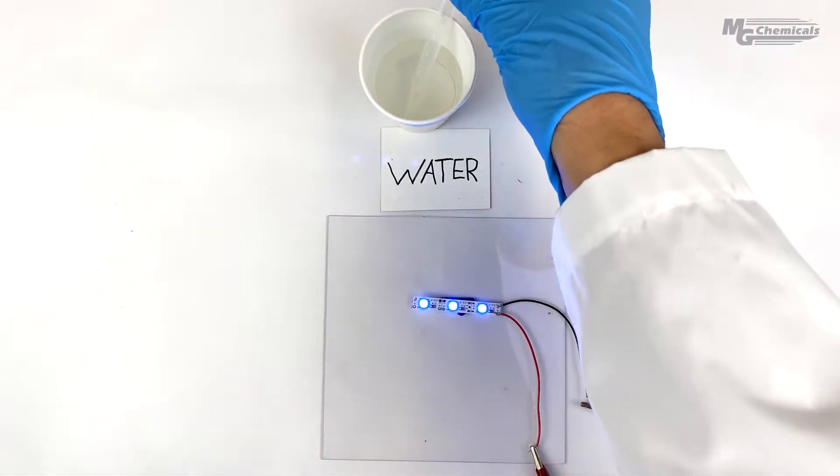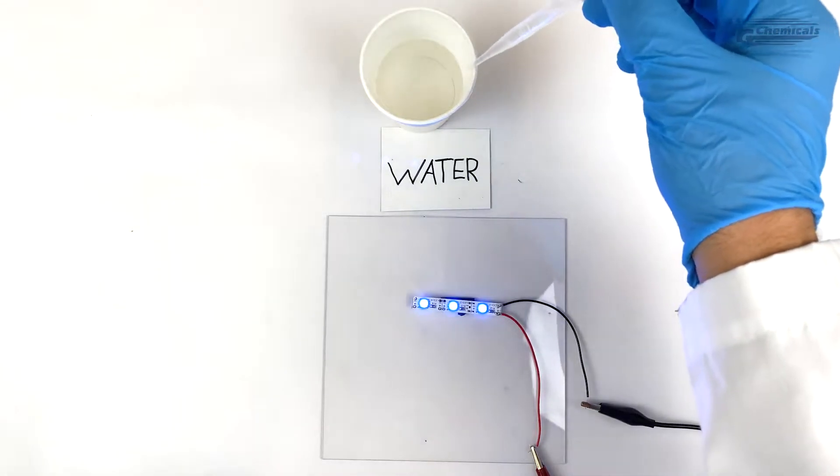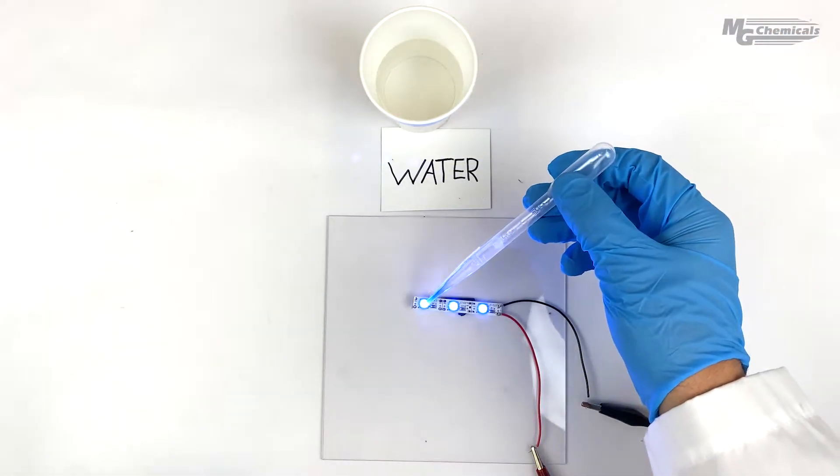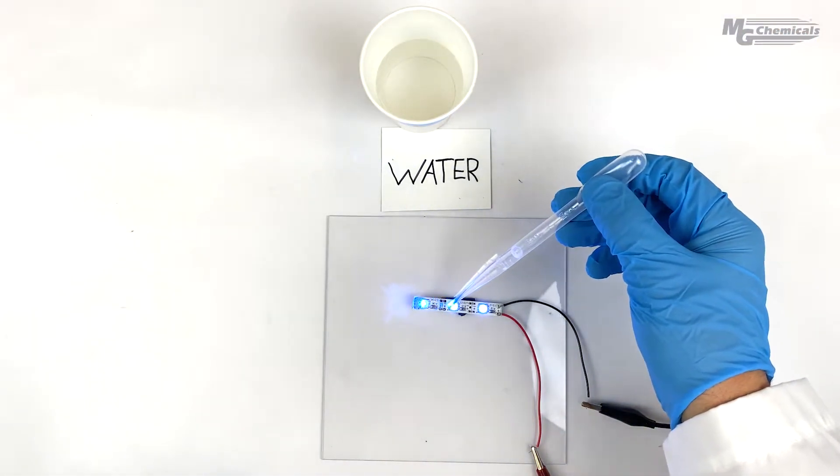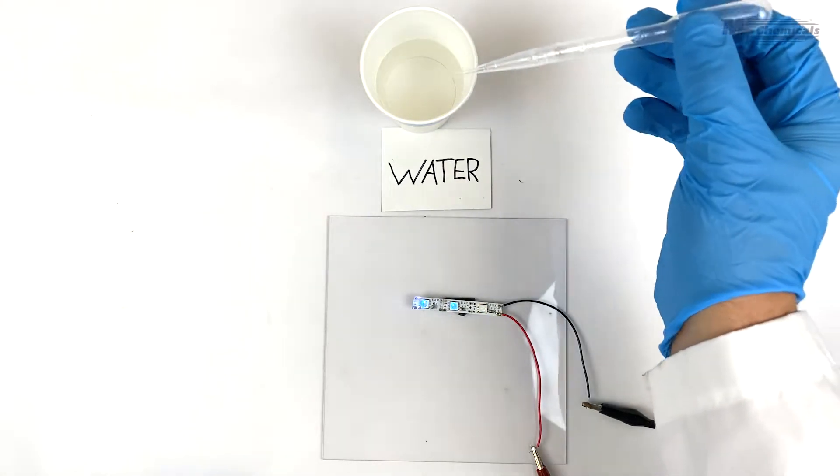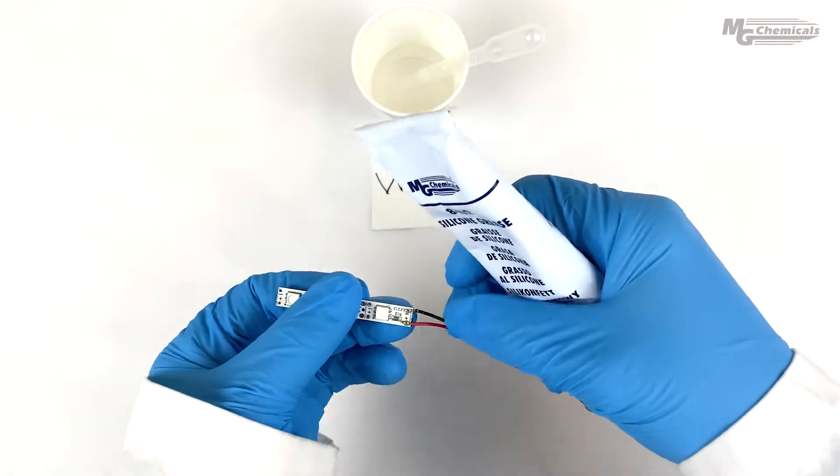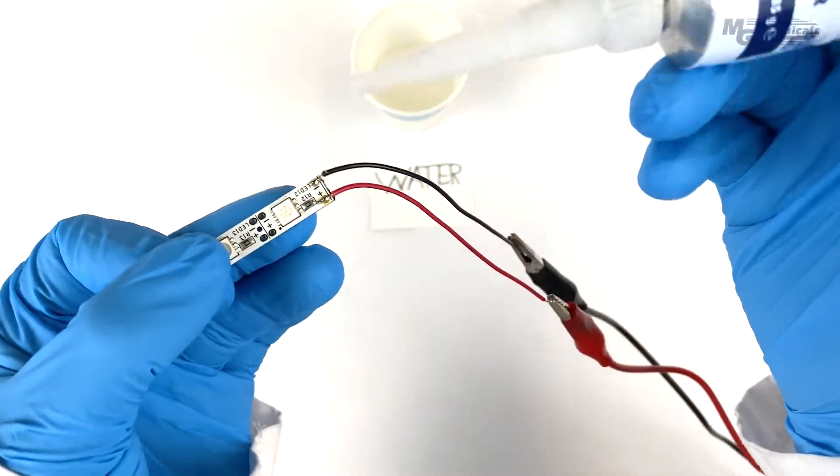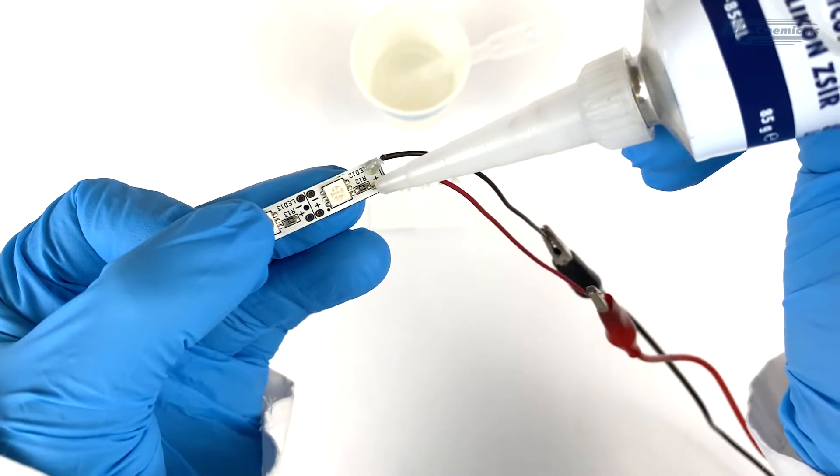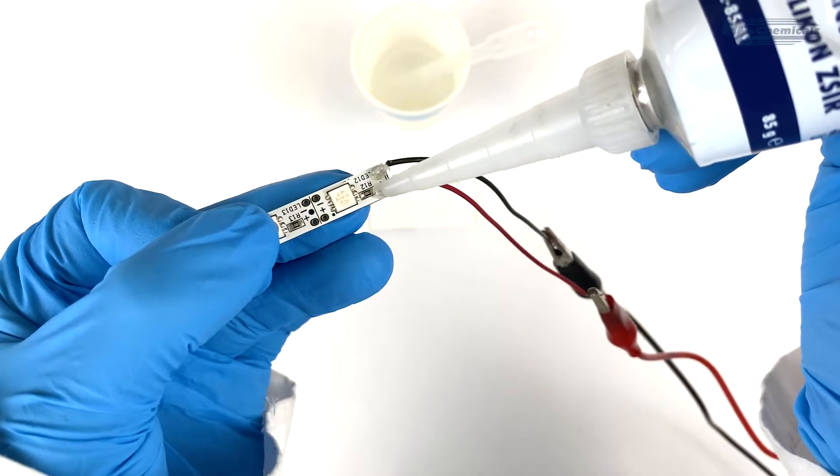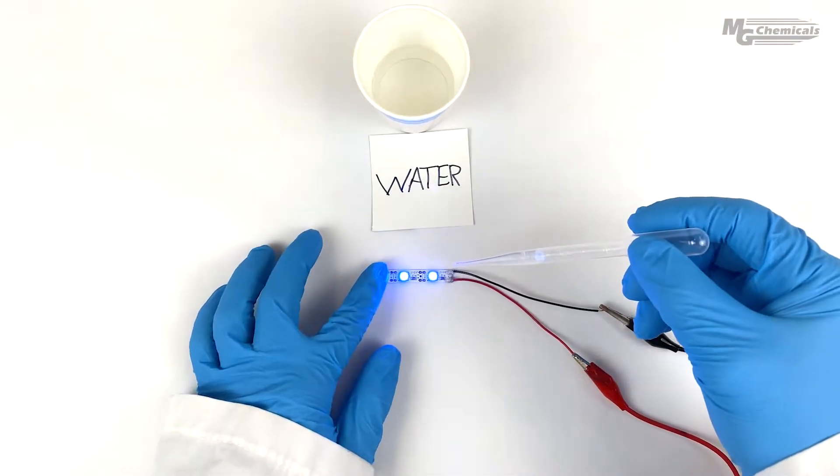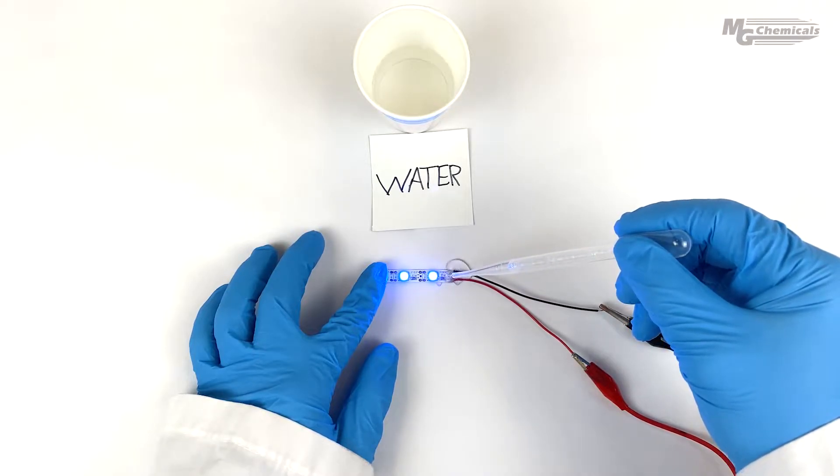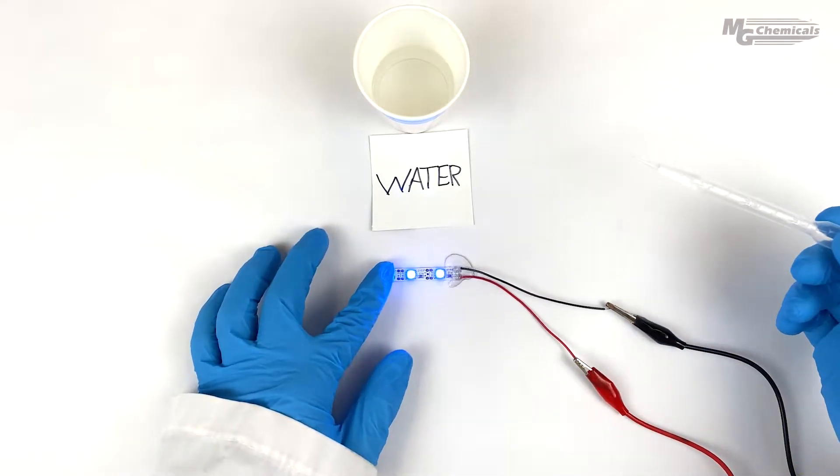The first demonstration shows how the 8462 dielectric grease can help prevent water from shorting the circuit. Without protection, the water drops short the circuit, shunting current away from its intended destination, causing the lights to glow. Now, we will add the dielectric grease around the connector. The hydrophobic nature of the grease seals water out, so the circuit continues to function as intended.